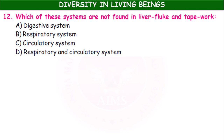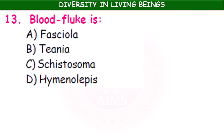Which systems are not found in liver fluke and tapeworm — digestive system, respiratory system, or circulatory system? Respiratory system and circulatory system are absent in these animals. The blood fluke's scientific name is Schistosoma haematobium — Fasciola hepatica is the liver fluke, Taenia solium is the tapeworm.